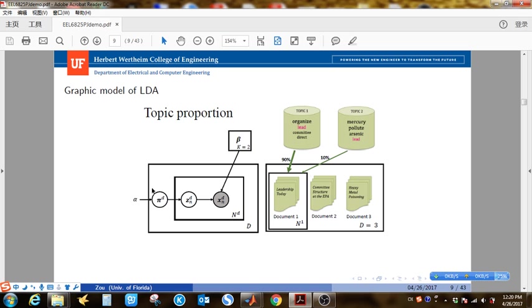The second latent variable that LDA learns is the topic proportion for each document, PI_D. For example, 19% of total words in document 1 are from topic 1 and 10% of the words are from topic 2.